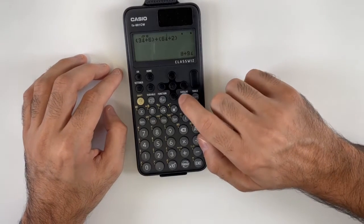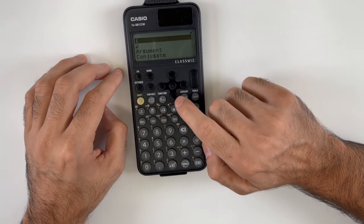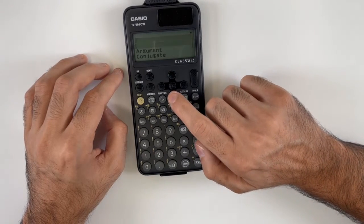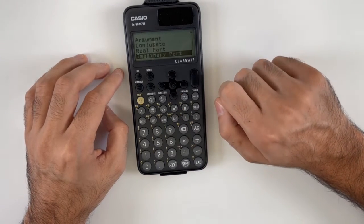Now, to use more complex number options, we press catalog, then complex. Then we can see the i, the angle, the argument, conjugate, real part, and imaginary part option.